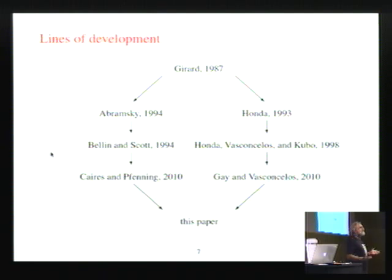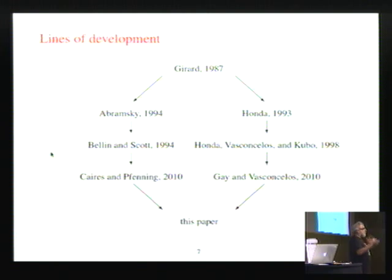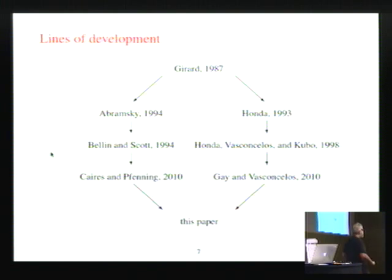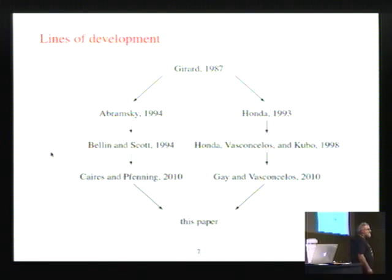And indeed, in 1994, Samson Abramsky wrote a paper with the title Proofs as Processes, pointing out how to do this. It was elaborated on a little bit later by Bellin and Scott, who filled in all the details. And what he did is he showed that you could take linear logic and translate it into process calculus in such a way that the simplifications in the linear logic corresponded to simplifications in the process calculus.